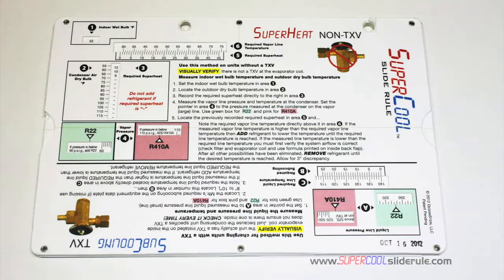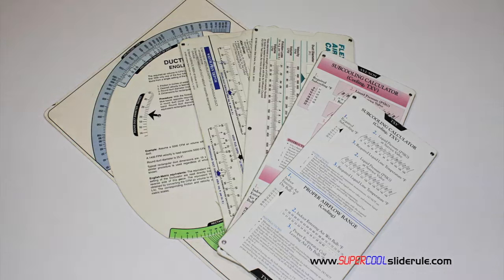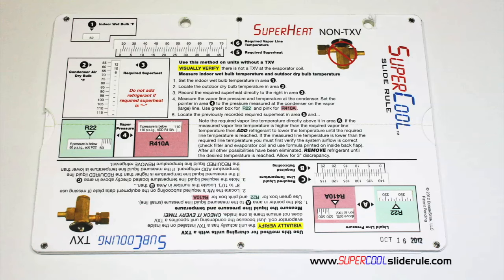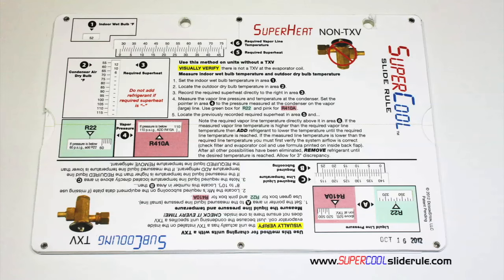Hello. I'd like to take a minute to introduce you to the coolest tool in the HVAC industry. Historically, technicians have carried four or five different slide rules — one for R-22, one for R-410A, one for metal duct sizing, one for flexible duct sizing, and yet others for diagnostics or troubleshooting. Thankfully, those days are gone. This one tool will allow you to charge a system with R-22 or R-410A in either the superheat or subcooling method.